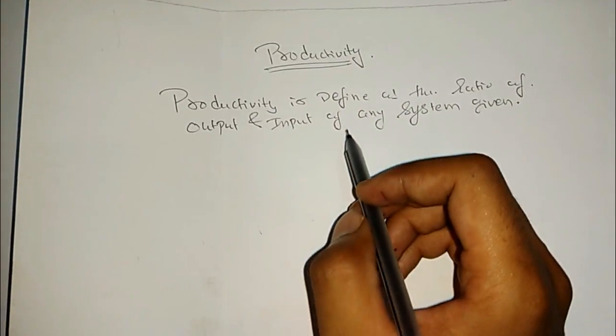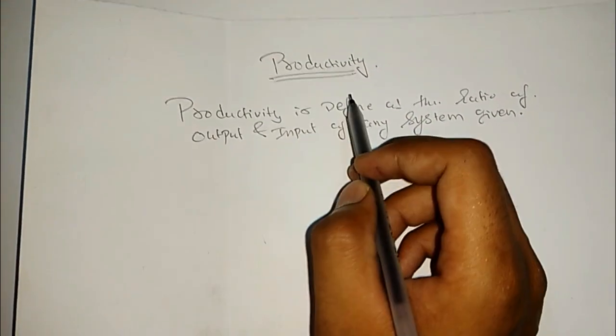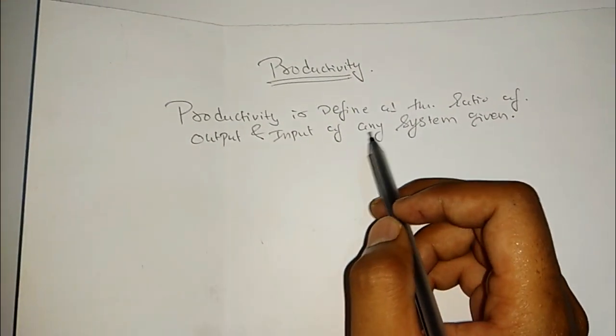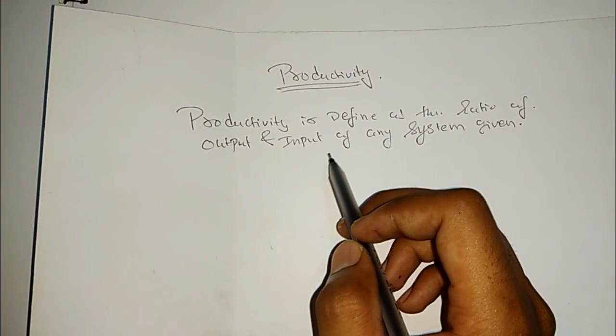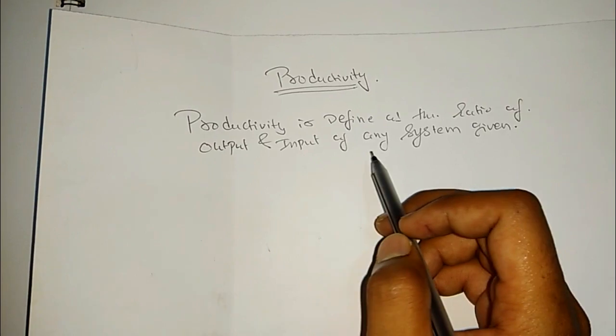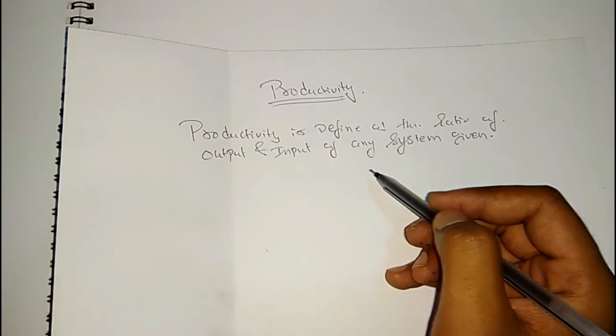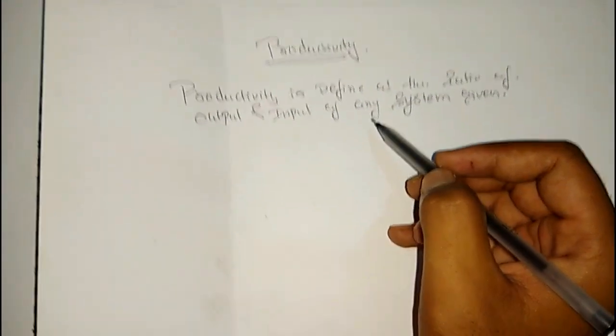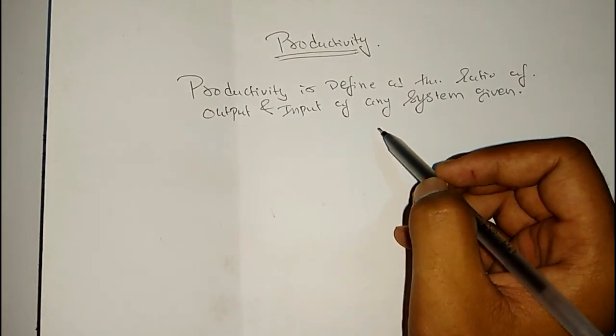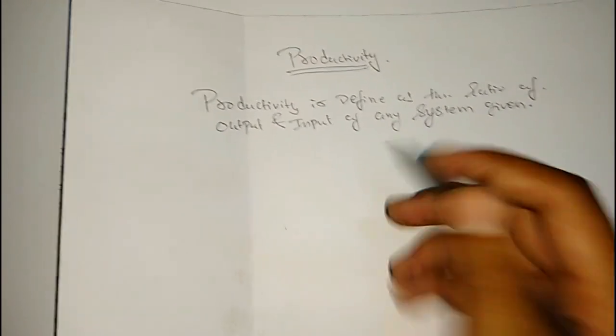Hello everyone, our topic is productivity. Productivity is defined as the ratio of the output and input of any given system. For better understanding of productivity, let us see an example.